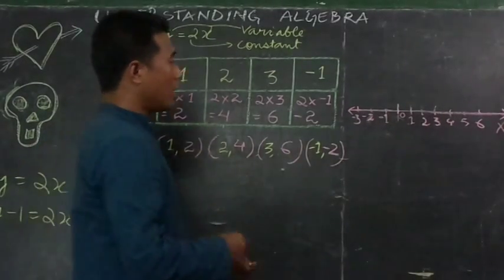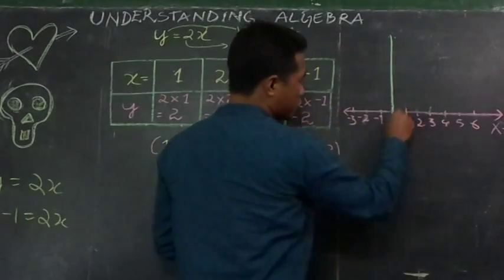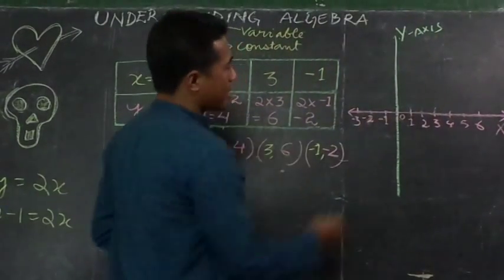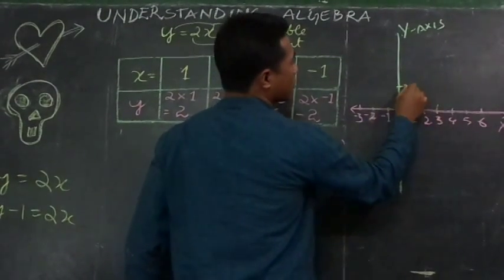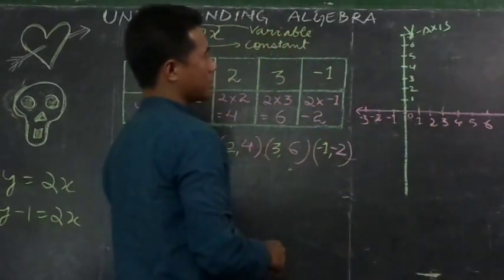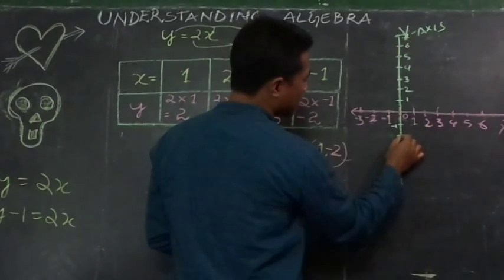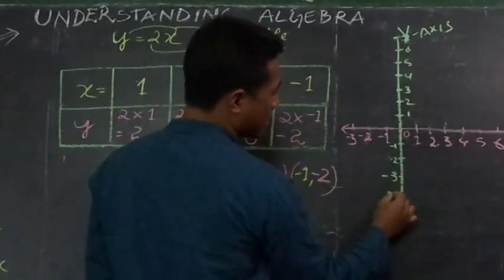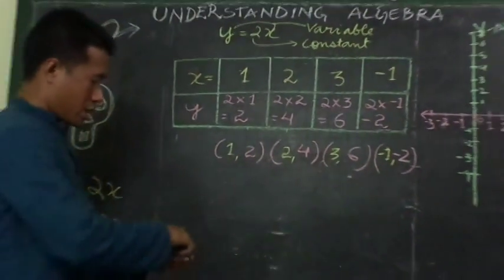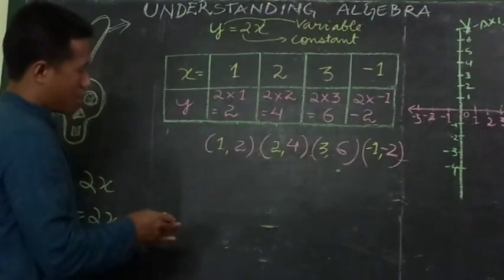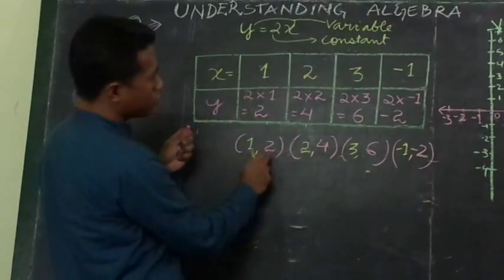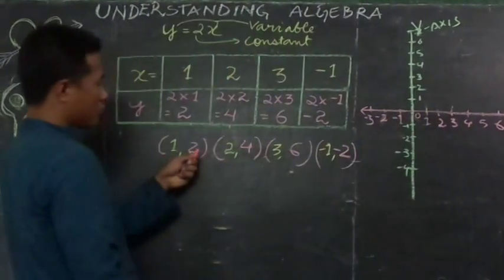This line here is the y-axis. The x-axis is horizontal. The y-axis goes in the positive direction: 1, 2, 3, 4, 5, 6, 7, and in the negative direction: minus 1, minus 2, minus 3, minus 4, minus 5, minus 6. So we have two lines — yellow color for x-axis and pink color for y-axis.